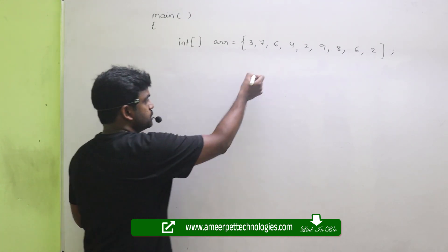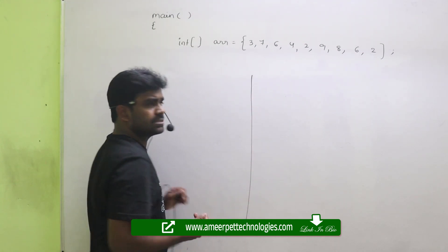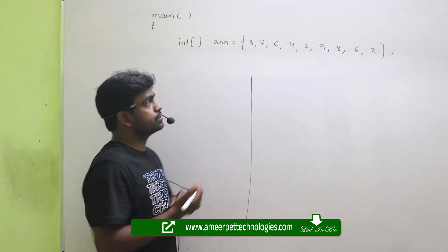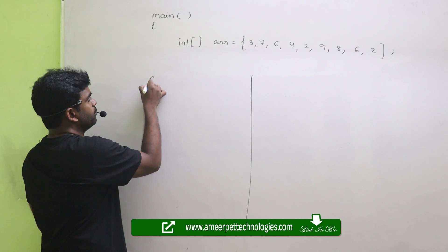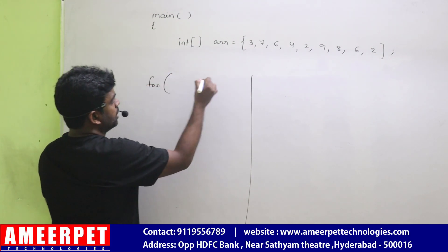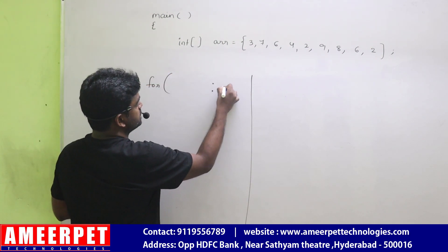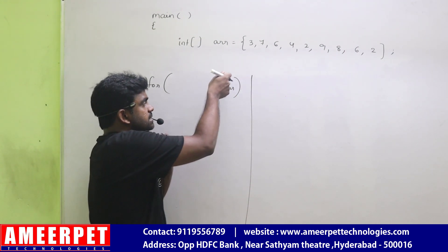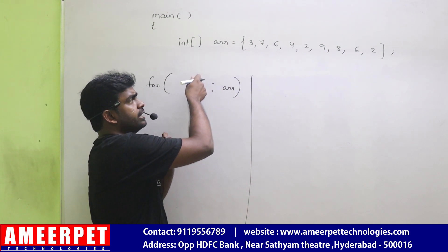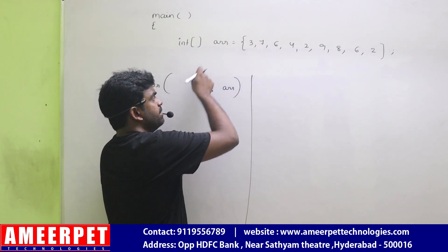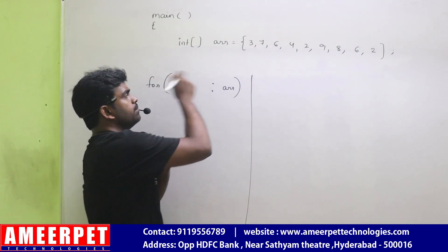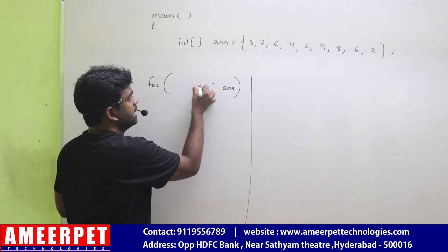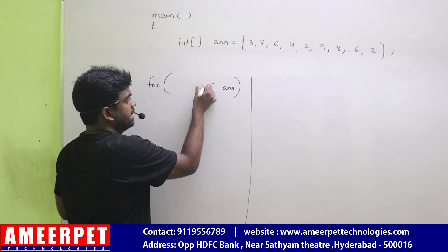First I am using the for-each loop because that is very simple — we already discussed it in the previous videos. Whenever you are using the for-each loop, for colon, I am just passing this ARR. From this array you will get each element: first 3 will come, next 7 will come, next 6 will come. Like that each element will come and store into a variable — suppose n I am taking.